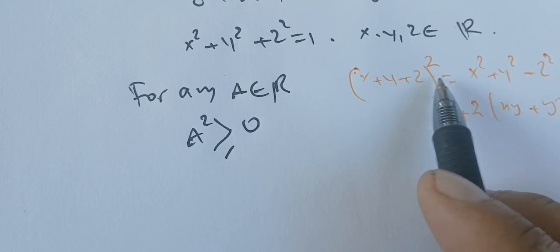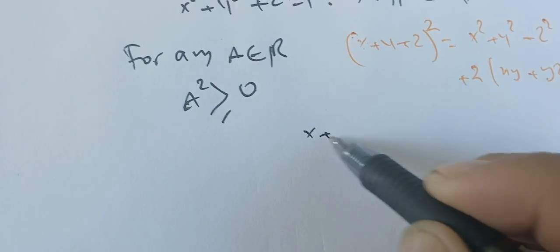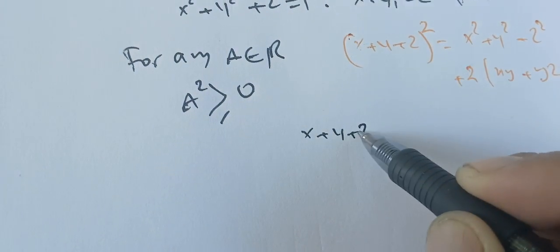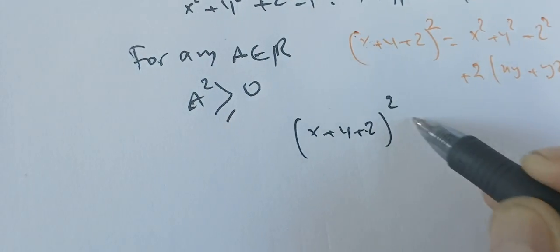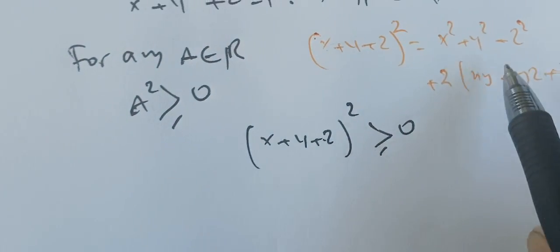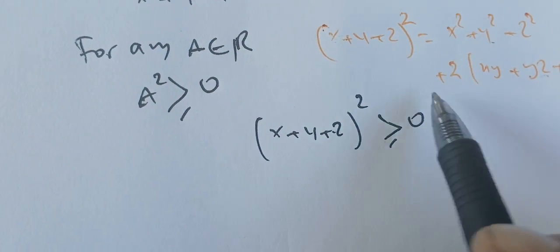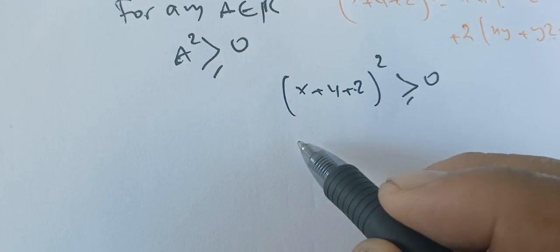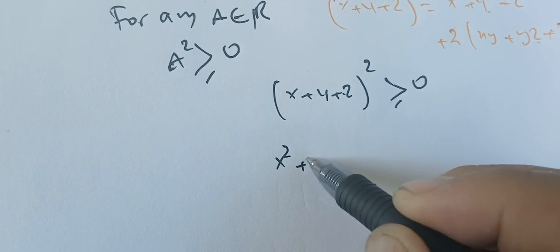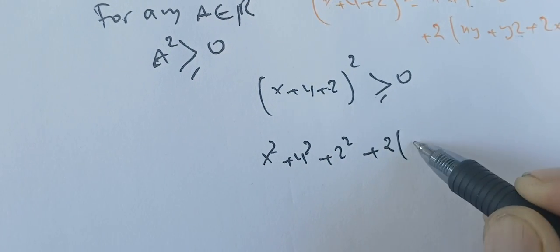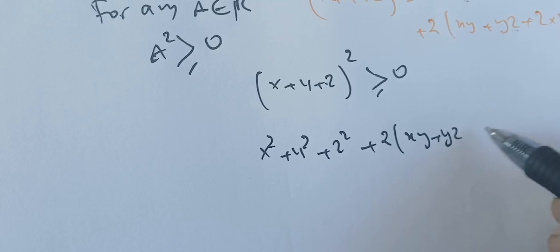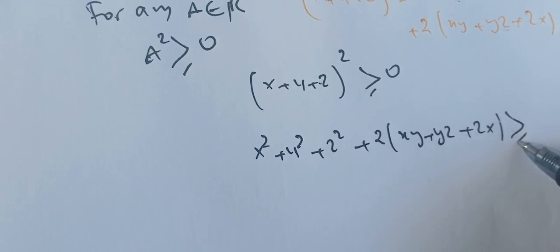So this means that (x+y+z)²≥0. And therefore we have this sum bigger than 0. Therefore we have x²+y²+z²+2(xy+yz+zx)≥0.